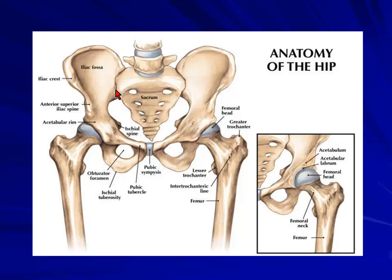Looking at the SI joint, you've got the sacral side and the iliac side. The pathologies are different for involvement of the sacrum versus the iliac side of the joint. As a group, it will be SI joint pathology. It may be degenerative, which may be secondary due to ankylosing spondylitis or any other inflammatory process.